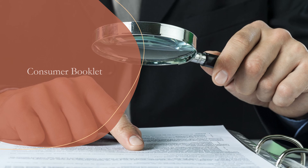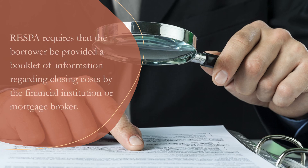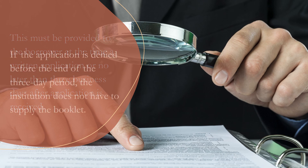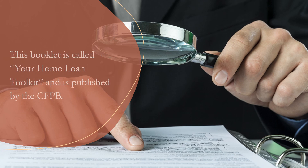Regarding the consumer booklet: RESPA requires that the borrower be provided a booklet of information regarding closing costs by the financial institution or mortgage broker. This must be provided to the borrower at the time a written application is taken, or no later than three business days after the application is received. If the application is denied before the end of the three-day period, the institution does not have to supply the booklet. The booklet is called Your Home Loan Toolkit and is published by the CFPB.